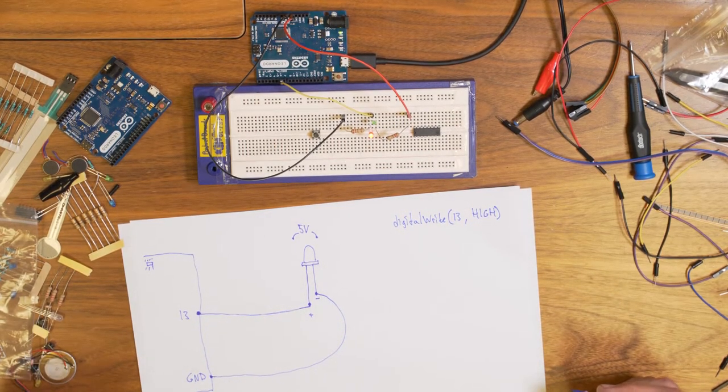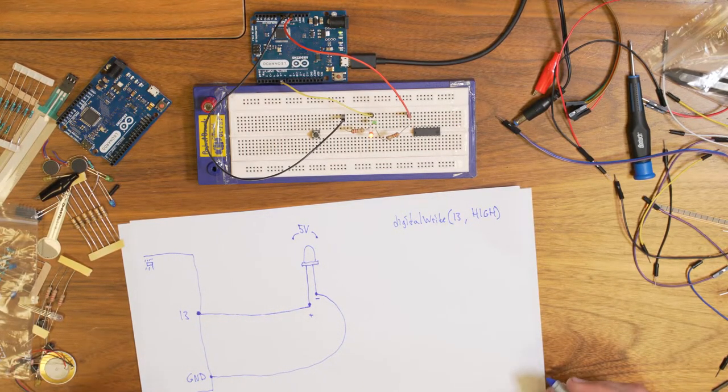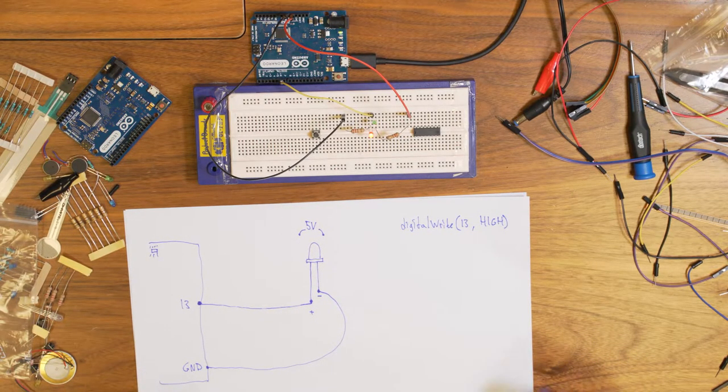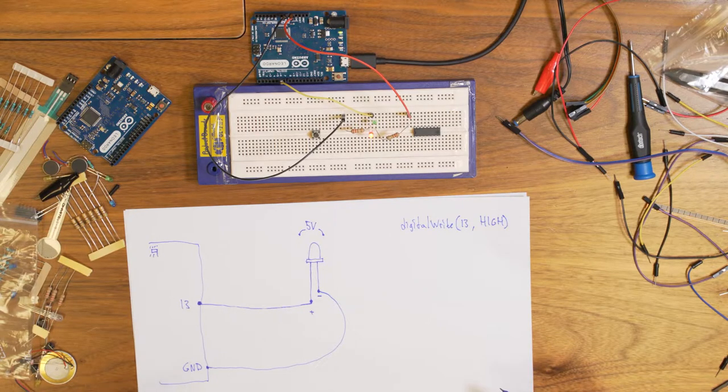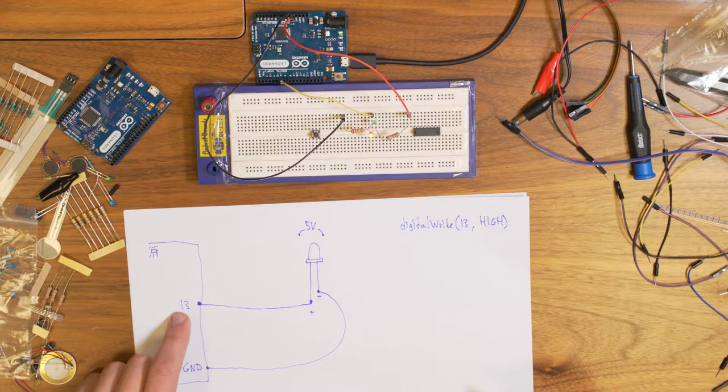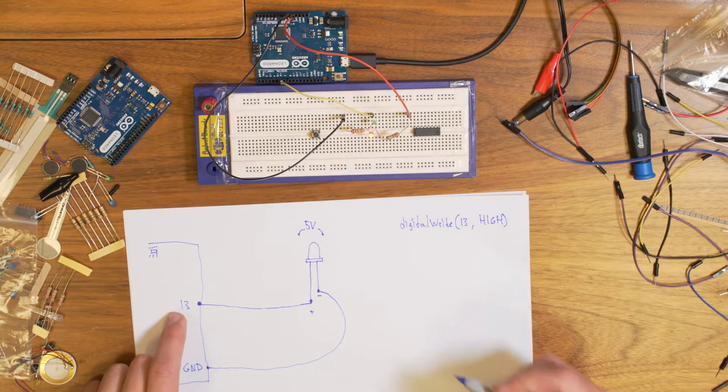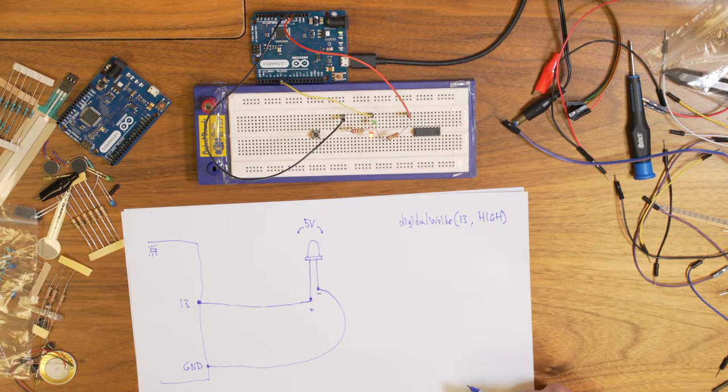And in this case, it's called active high. So this is basically that you can turn on the LED by applying high to the pin, by applying five volts to the LED.